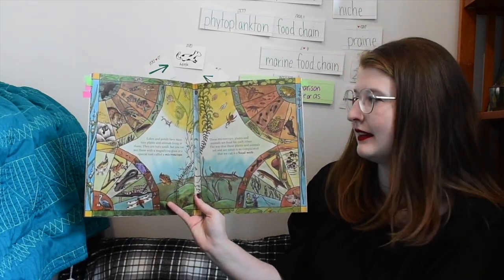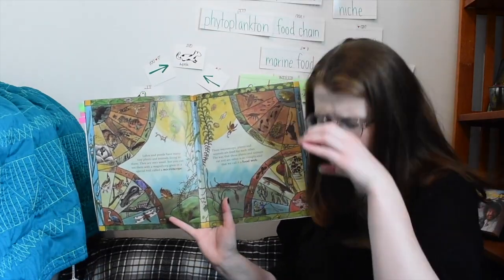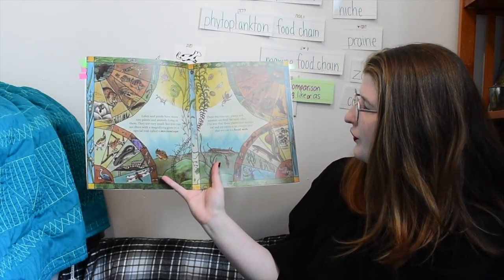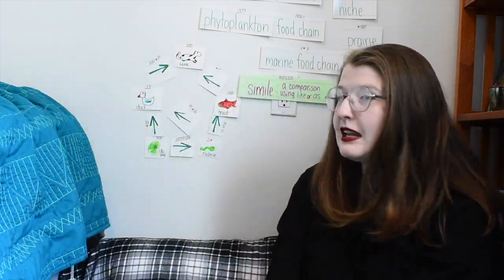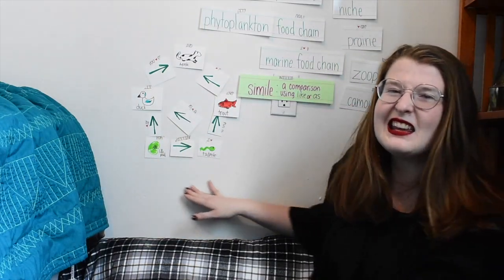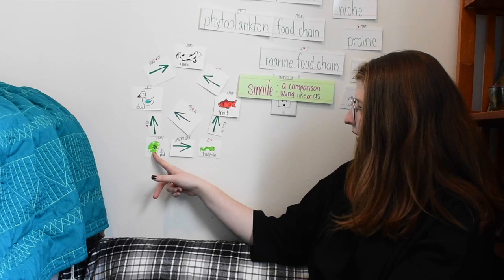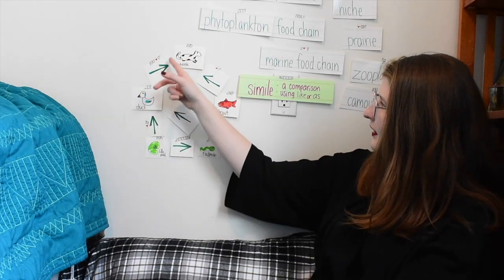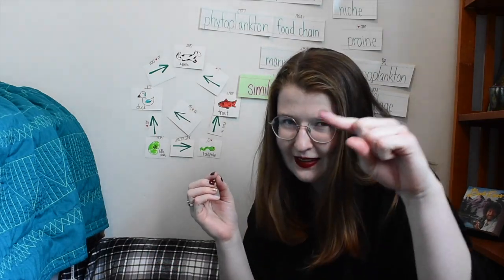Lakes and ponds have many tiny plants and animals living in them — very small, but you can see them with a magnifying glass or a microscope. These microscopic plants and animals are food for each other. The way that these plants and animals eat and are eaten is so complicated we call it a food web. A food web goes in all sorts of directions — a tadpole eats a lily pad, a duck eats a lily pad and also the tadpole, a trout eats the tadpole, a mink eats the trout and the duck. It crisscrosses and gets more and more complicated.